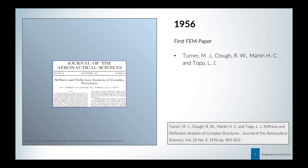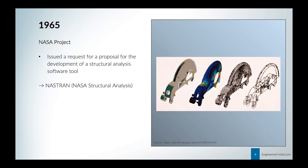Jumping to 1956, we have the first finite element paper released by Turner, Clough, Martin, and Topp — you can see the title in the bottom right corner. In 1965, we had the NASA project, and they issued a request to start development of a structural analysis tool, which we call Nastran — some of you might know it, it's very famous.